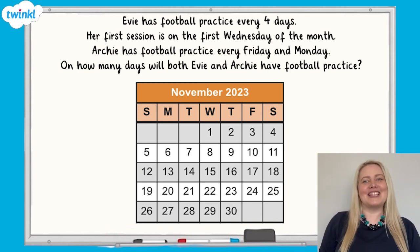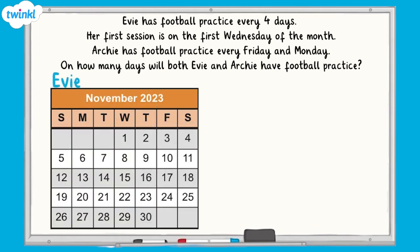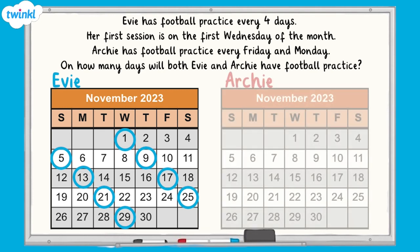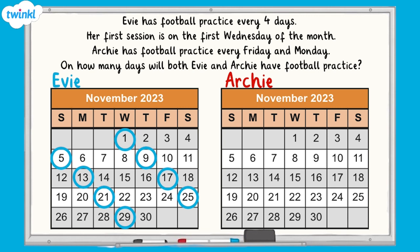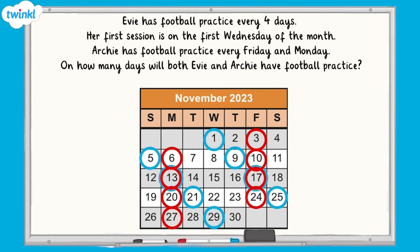All finished? Fantastic! Let's take a look at the answers. Evie has football practice every four days starting on the first Wednesday of the month, so she has practice on the 1st, 5th, 9th, 13th, 17th, 21st, 25th and 29th of November. Archie has football practice every Friday and Monday, so he has practice on the 3rd, 6th, 10th, 13th, 17th, 20th, 24th and 27th. This means there are two days where both have football practice: the 13th and the 17th of November.